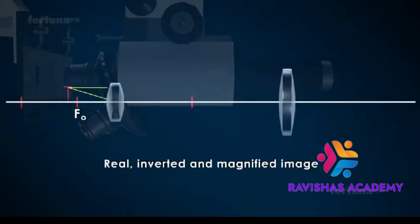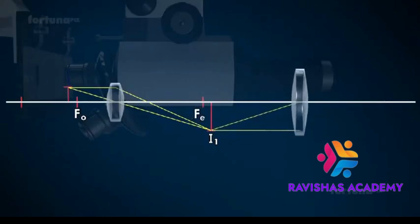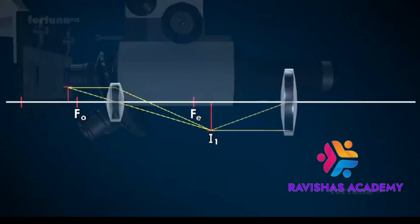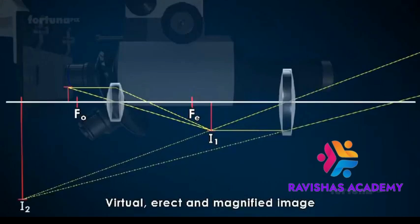A real, inverted, and magnified image I1 is formed. The magnified image I1 acts as an object for the eye lens. The eyepiece is adjusted such that the image I1 lies within the focus of the eyepiece FE. The eyepiece functions as a magnifying glass and forms a virtual, erect, and magnified image I2 of the object.